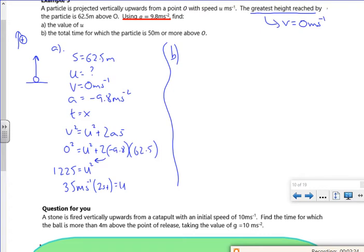So part b, the total time for which the particle is 50 meters or more. So think about what happens, I fire it up, that's where 50 meters high is, it goes up to 62.5, comes back down, and lands. So if I find the times for 50 meters, then the time in between is what I want.